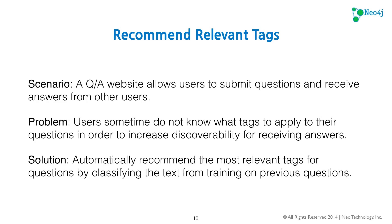The second use case is recommending relevant tags. We have a Q&A website like Stack Overflow or Quora where users submit questions and receive answers. The problem is that users sometimes don't know what tags to apply to their questions to increase discoverability. The solution is to automatically recommend the most relevant tags by classifying the text from training data of previous questions. For example, on Stack Overflow, if I post a question about Neo4j and the model is trained on previous answered questions, it would automatically recommend the Cypher tag even if you didn't specify it.